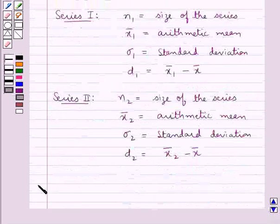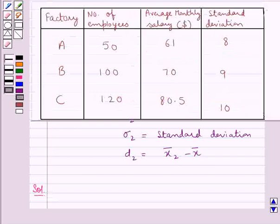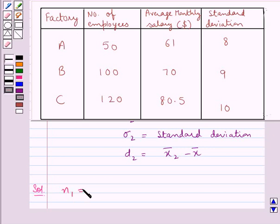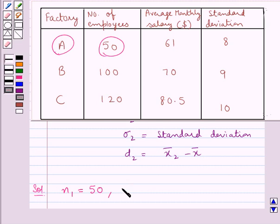Let's now proceed with the solution. We are given a table with three factories A, B and C, their respective number of employees, their average monthly salaries in dollars, and their respective standard deviations. Since we have three factories, we have three series. M1 is the size of factory A, which is the number of employees in factory A, that is 50. So M1 = 50. The average monthly salary is the arithmetic mean, so x̄1 = 61. Sigma1 is the standard deviation for factory A, which is 8.